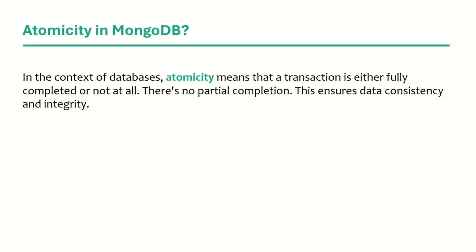In the context of databases, atomicity means that a transaction is either fully completed or not at all. There is no partial completion, and this ensures data consistency and integrity. Let's try to understand it with an example.